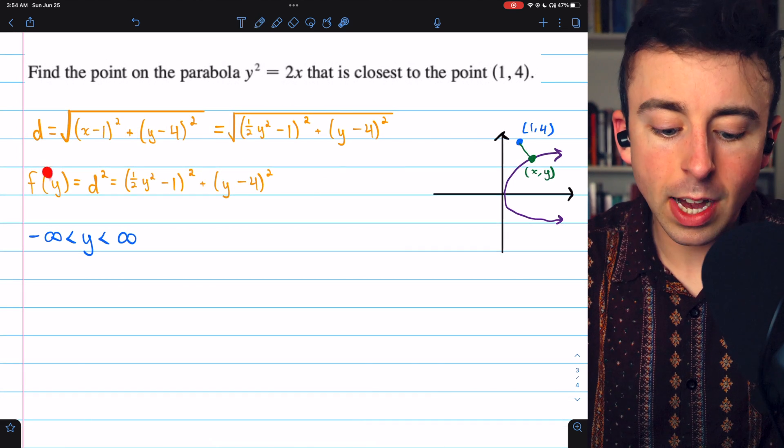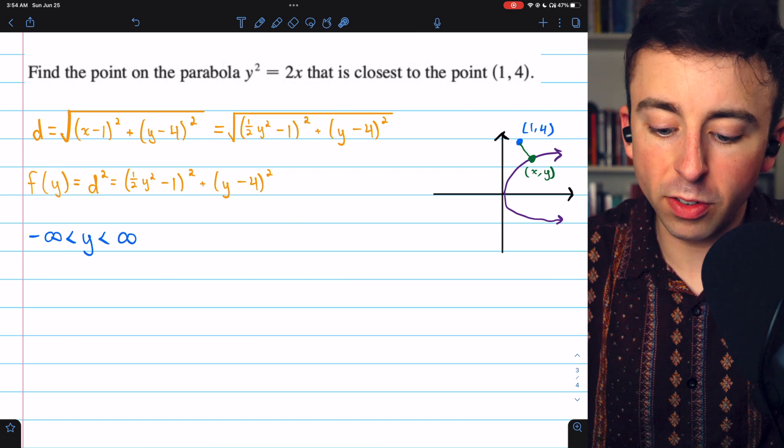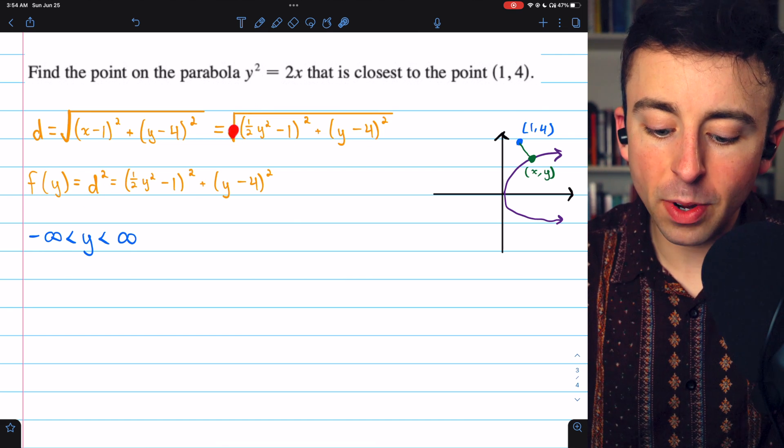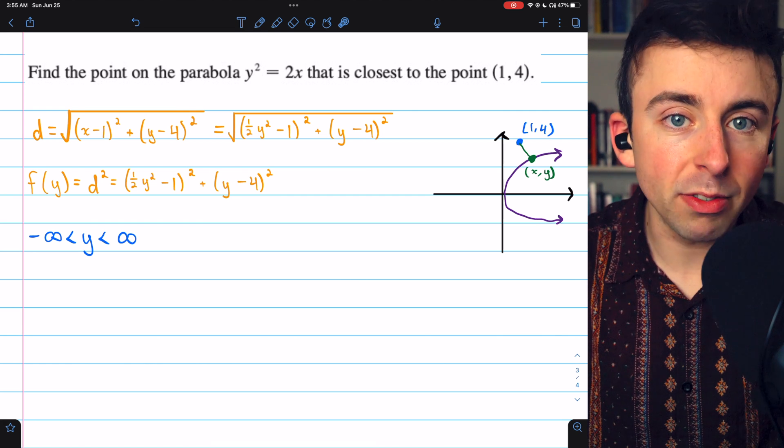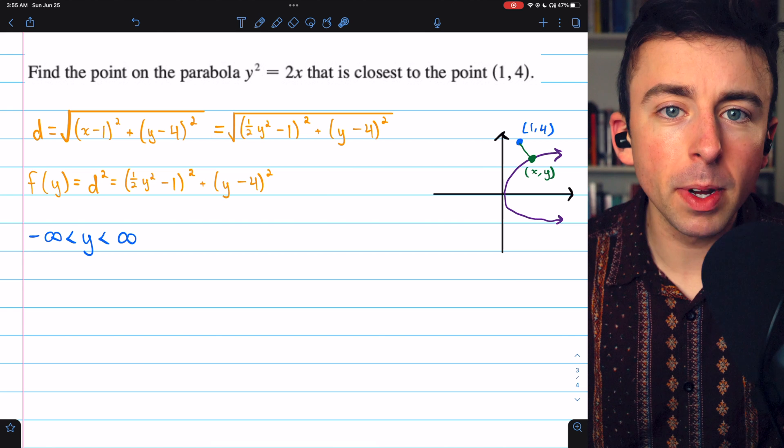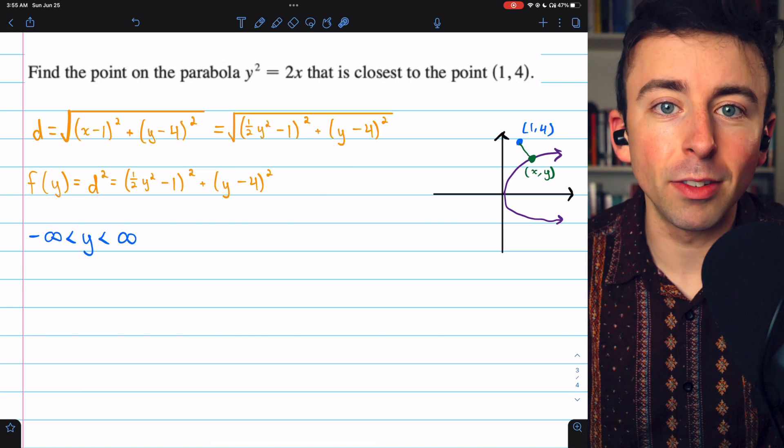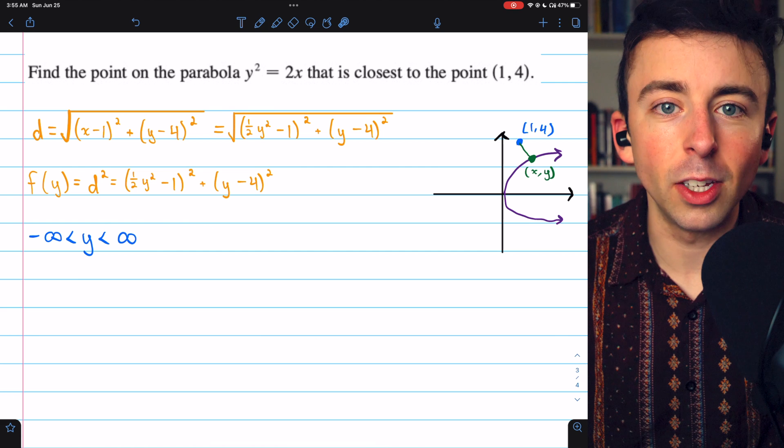So we'll call our function f of y. What f of y is, is d squared, which is just the distance function, but without that square root because we squared it. Again, the idea is that wherever d squared is minimum, that's also where d's minimum occurs. So this one will be easier for us to find because we don't have to deal with the square root.